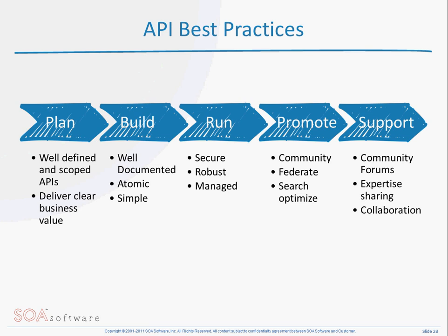The way that we see it is that APIs have a lifecycle, and that lifecycle starts, like many do, with planning. Planning is potentially the most important stage of this entire lifecycle. You have to decide which APIs to publish. The APIs need to be well-defined and well-scoped, and most importantly, they need to deliver clear business value.